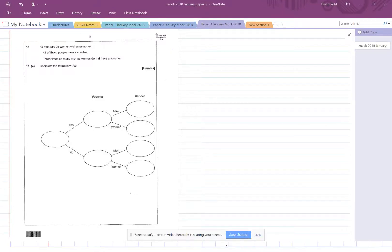Okay, question 11. Since 42 men and 38 women visit a restaurant, as soon as I see things like that, I think it's worth writing down how many people in total. So that's 42 and 38. There are 80 people in total.